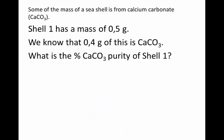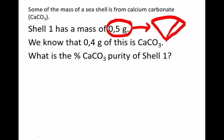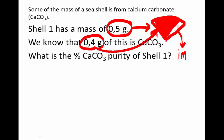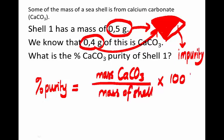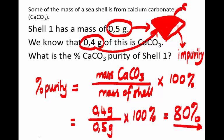Let's take a very easy example to start with. Shell 1 has a mass of 0.5 grams — so the whole shell weighs 0.5 grams. 0.4 grams of this is calcium carbonate, and the remainder, which is 0.1 gram, is some other stuff we call impurities. So the percent purity of the calcium carbonate is: mass of calcium carbonate inside the shell (0.4 g) divided by mass of the whole shell (0.5 g), converted to a percentage — which gives 80%. 80% of this shell is calcium carbonate, 20% is impurities.